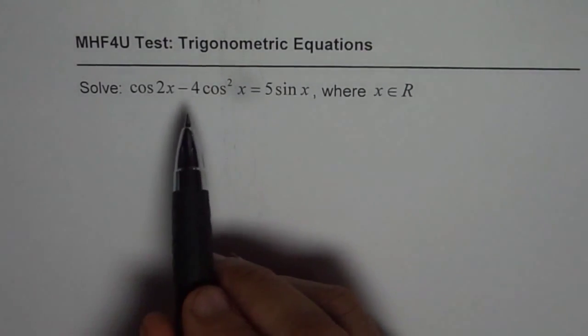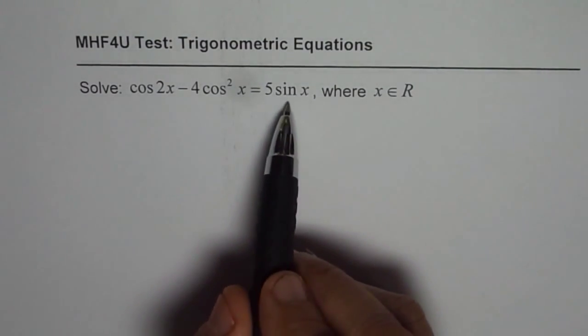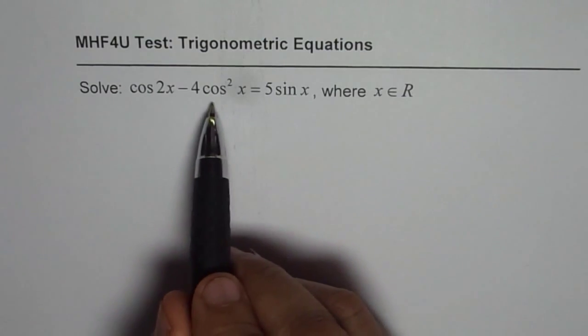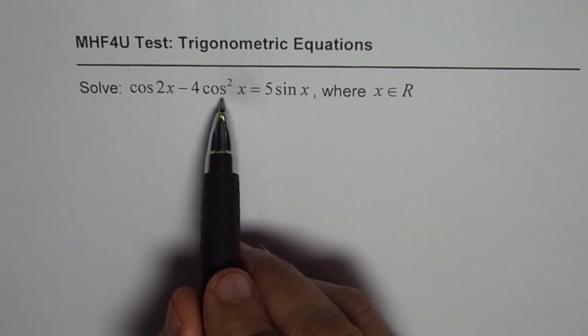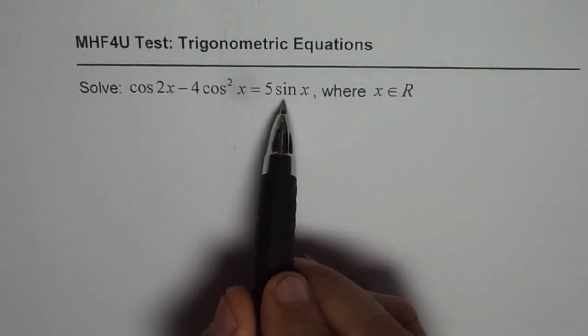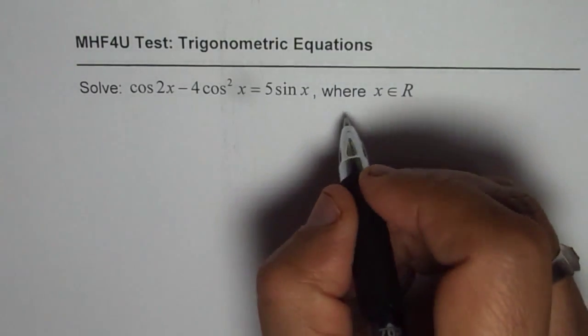where x belongs to real numbers. That means we have to provide a general solution for this particular equation. This equation has both cos and sine terms. Since we have a sine term and these cos squares can be related in terms of sine, we should write a quadratic equation in sine itself.